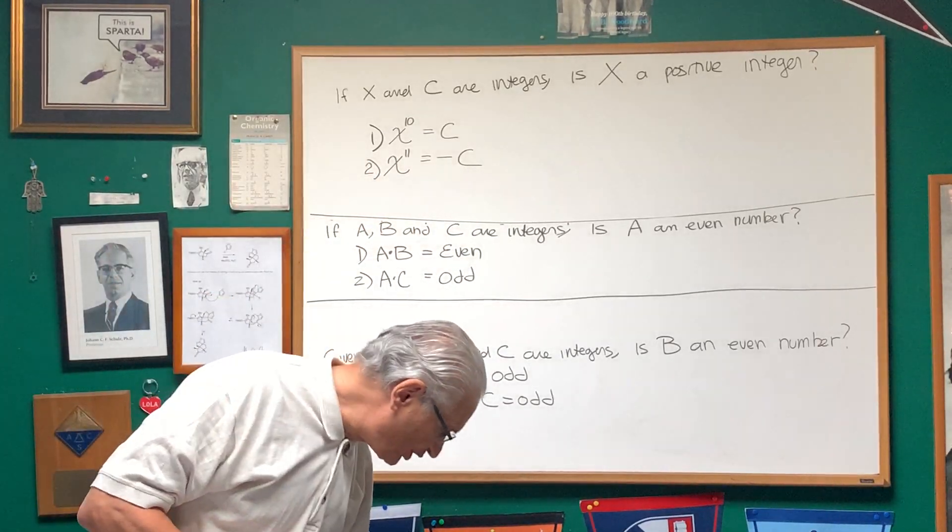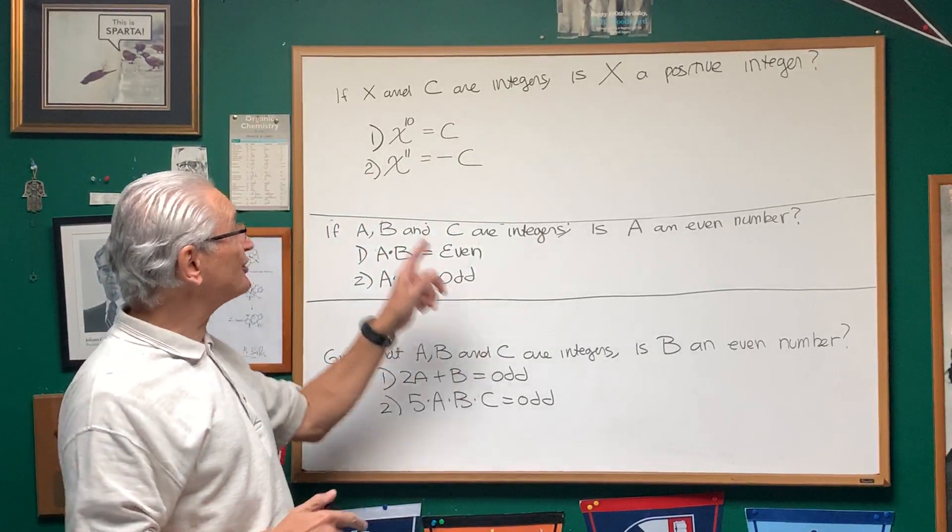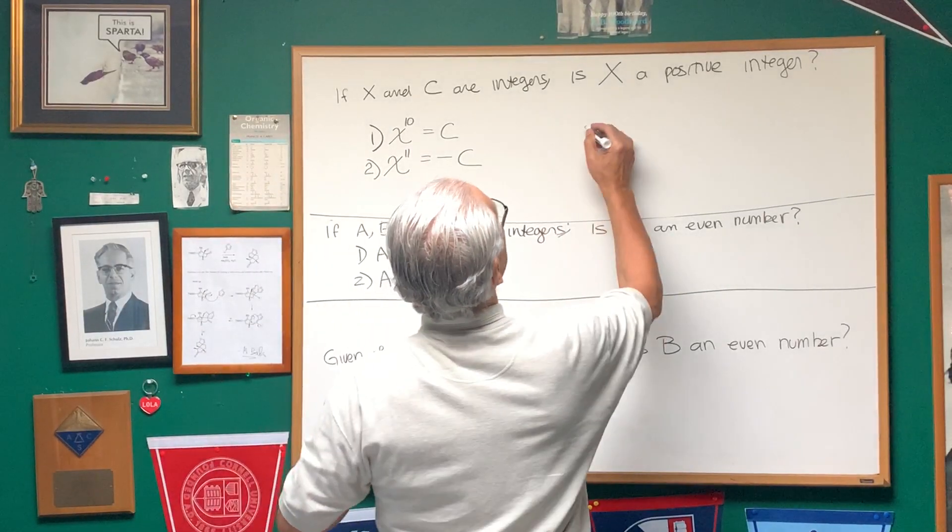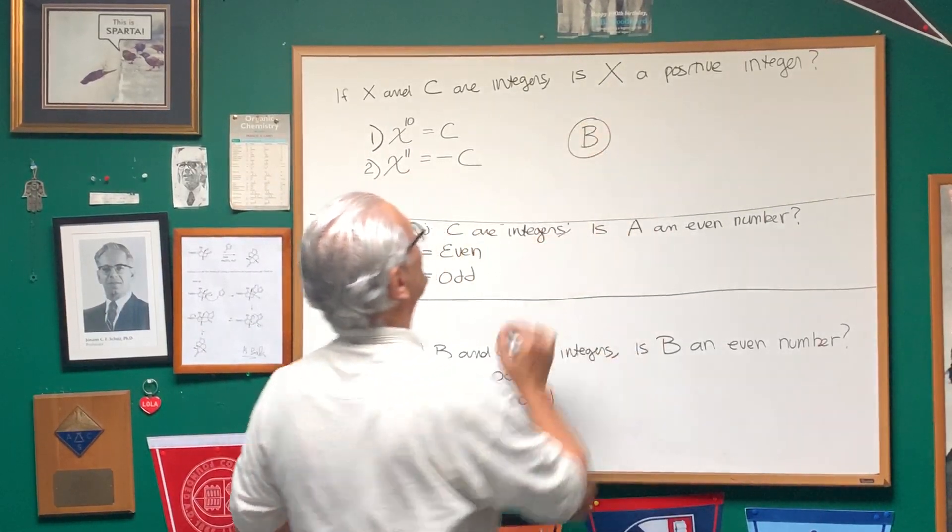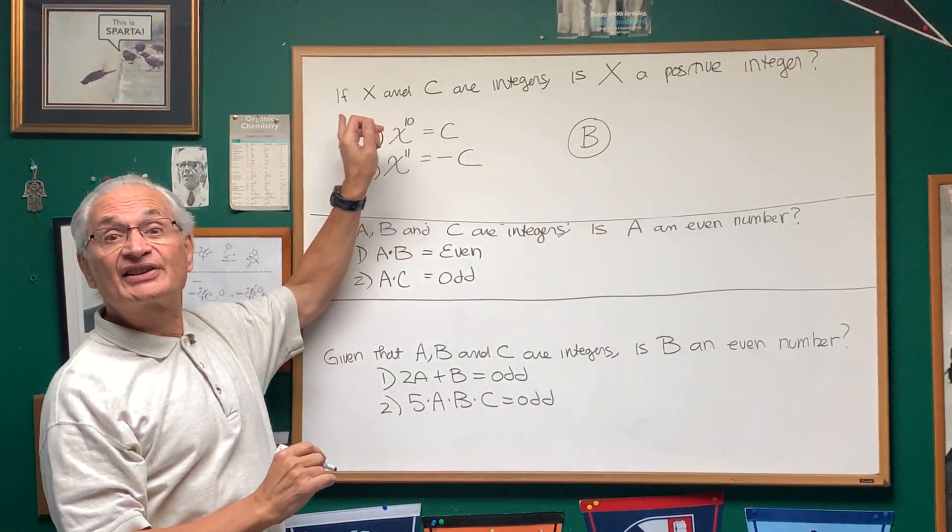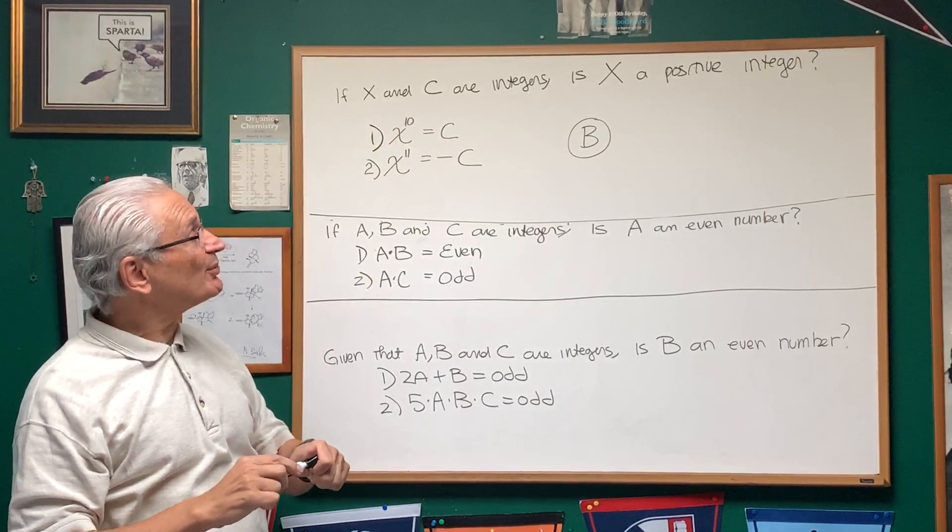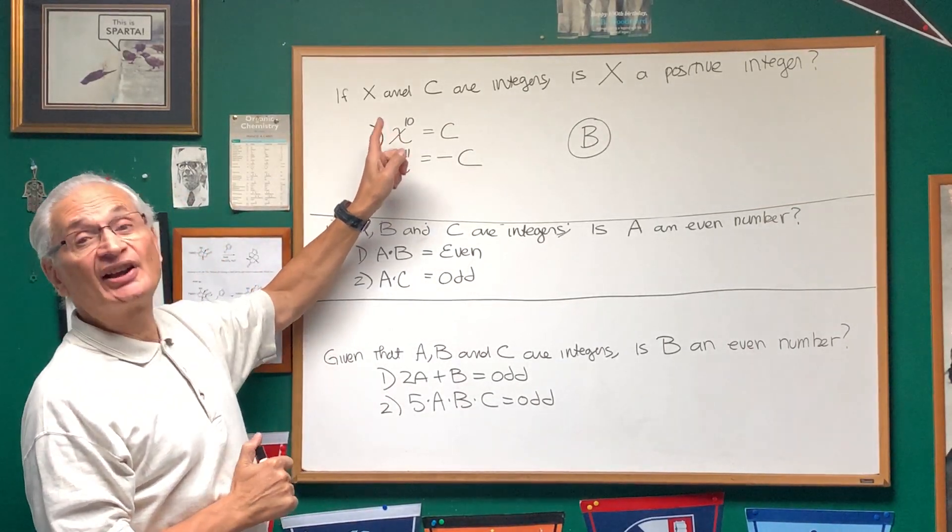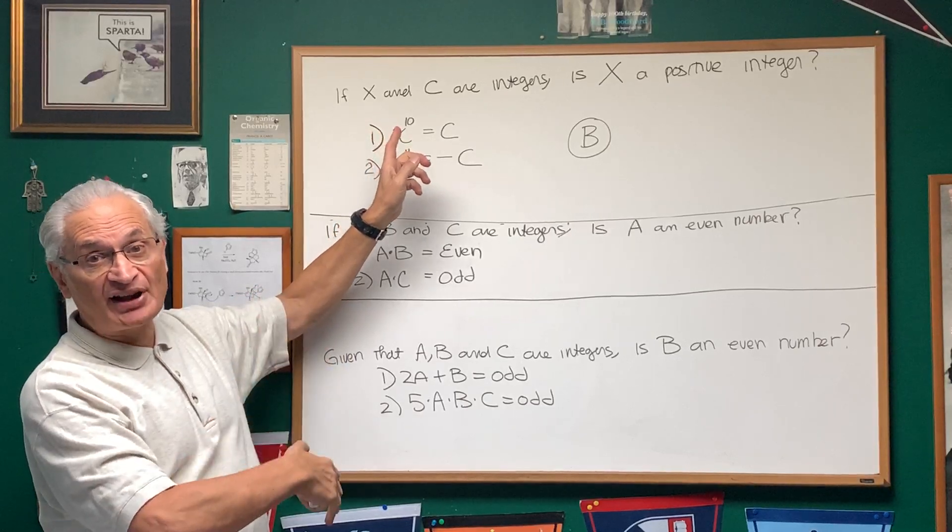X to the 11th power is negative C. So the answer is statement two alone is sufficient. The answer is B. Statement two alone is sufficient, but statement one is not sufficient. Statement one is not sufficient to answer the question. Statement one is true whether the X is positive or negative.